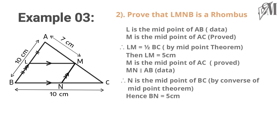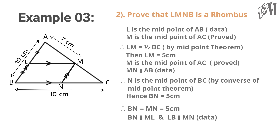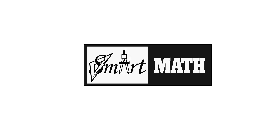Since BC is equal to 10 centimeters, BN becomes 5 centimeters. We have shown BN is equal to 5 centimeters and MN is also equal to 5 centimeters, so the adjacent sides are equal. And since BN is parallel to ML and LB is parallel to MN, we can say LMNB is a rhombus. Hope I made myself clear with the midpoint theorem, the converse, and its application. See you with another Smart Math video — until then, goodbye.